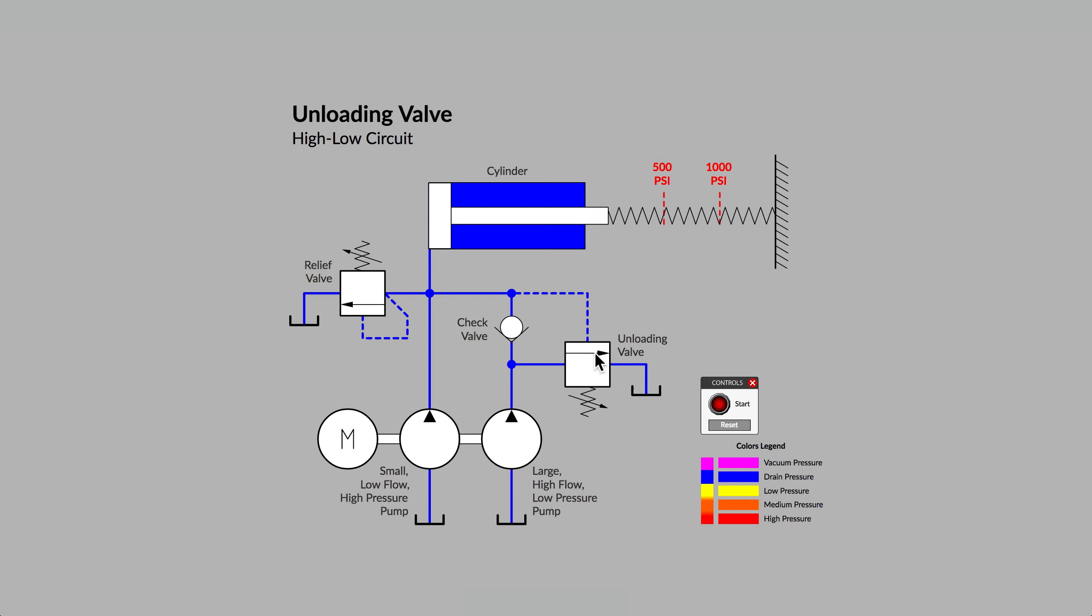The poppet, represented by an arrow inside of the box, will move to the open position against the force of the spring only when the pilot pressure is high enough. See if you can figure out what the pressure setting is for the relief valve and for the unloading valve.